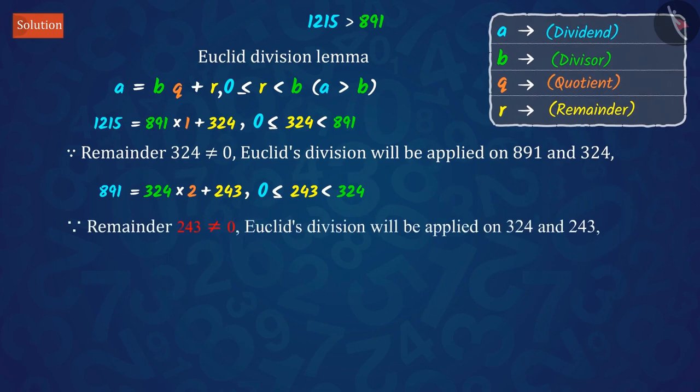Here also, the remainder is not equal to 0. So, we apply Euclid's division lemma once again.